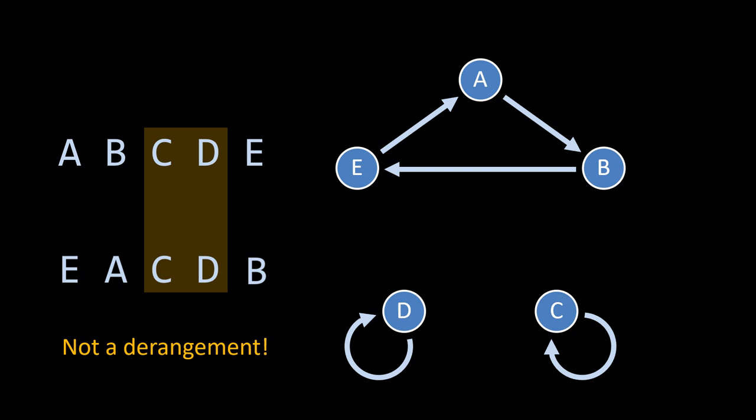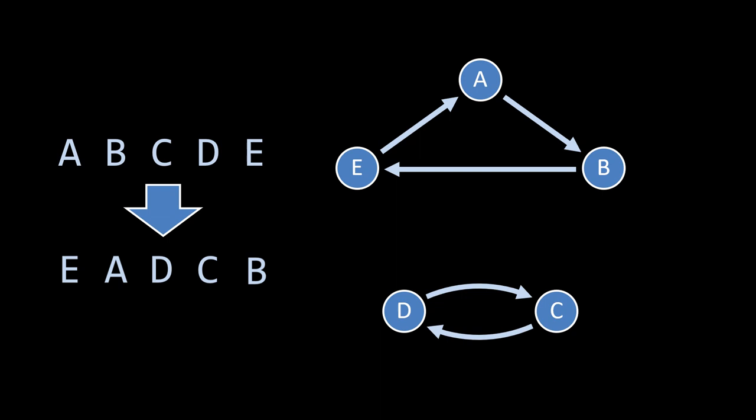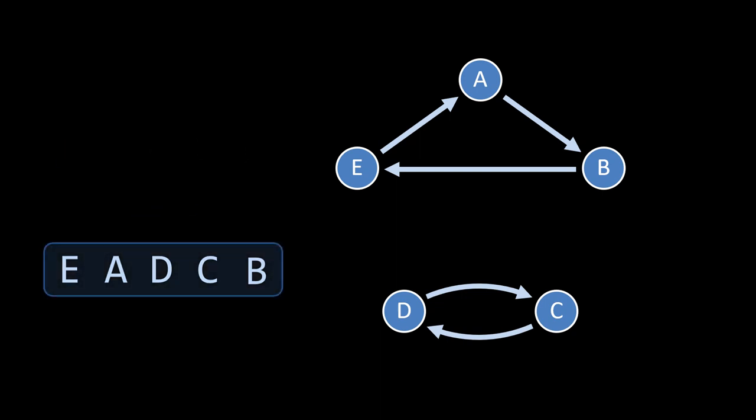And then c and d could map into themselves, but this way we won't get a derangement. So, to count derangements only, closed loops on a single vertex are to be avoided. From here on, a sequence of letters like this one will denote a derangement, relative to the original alphabetic ordering of the set.